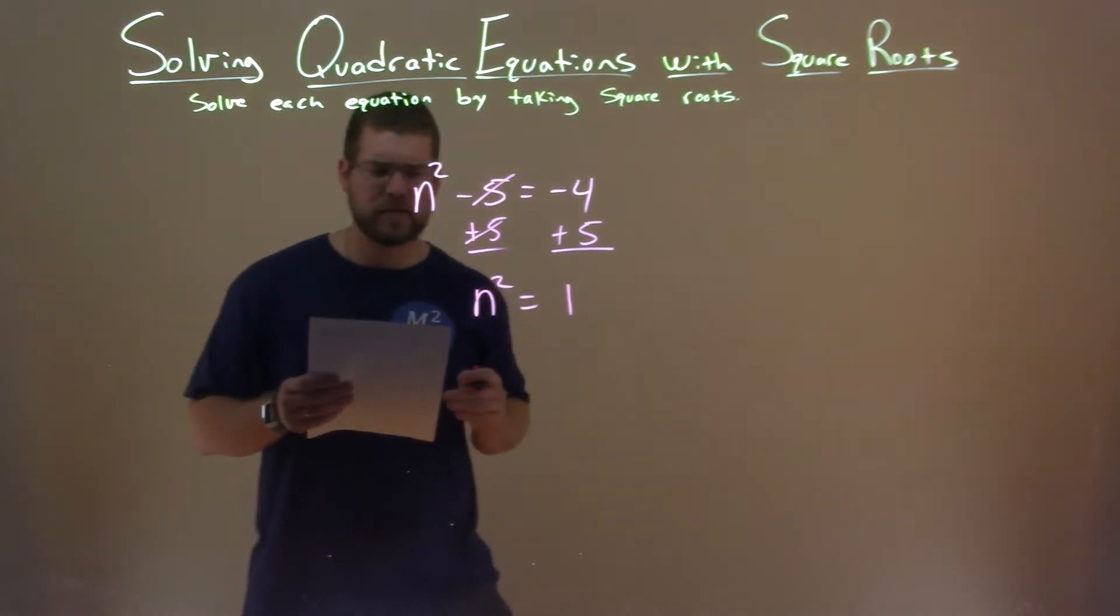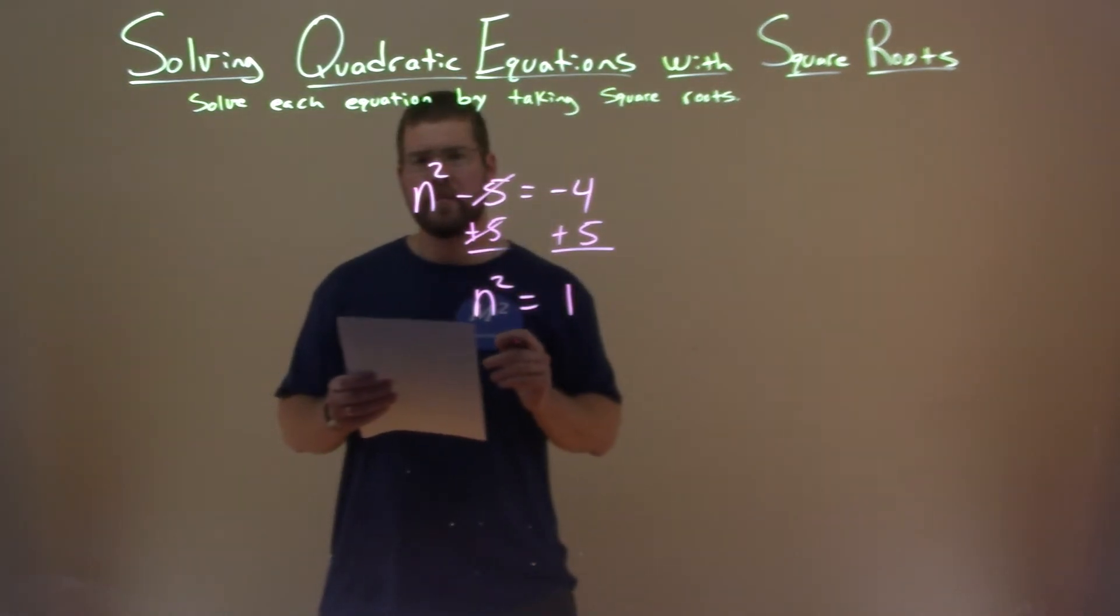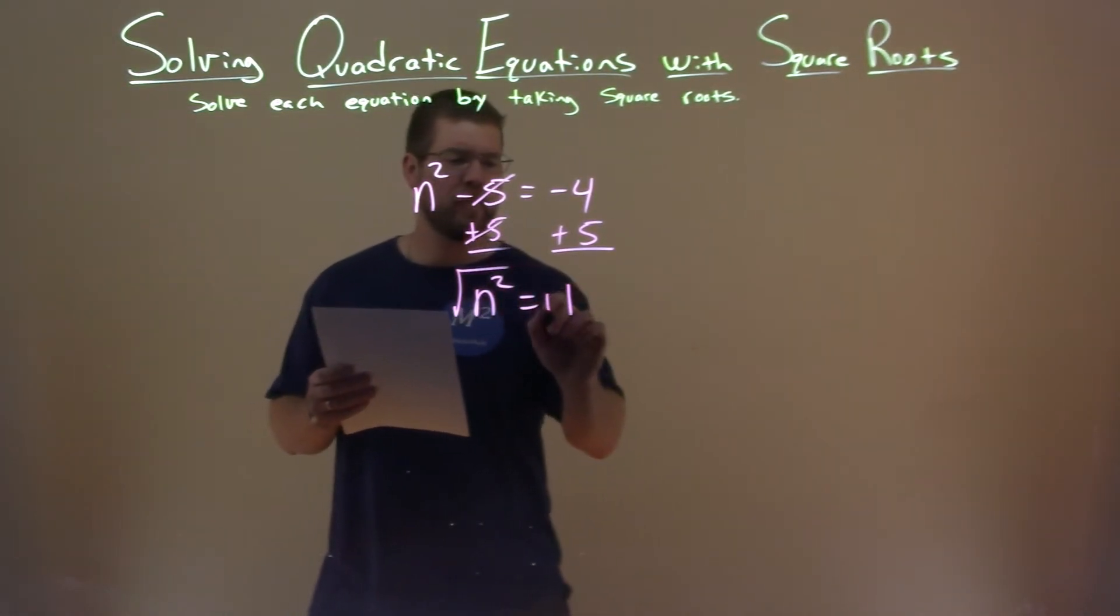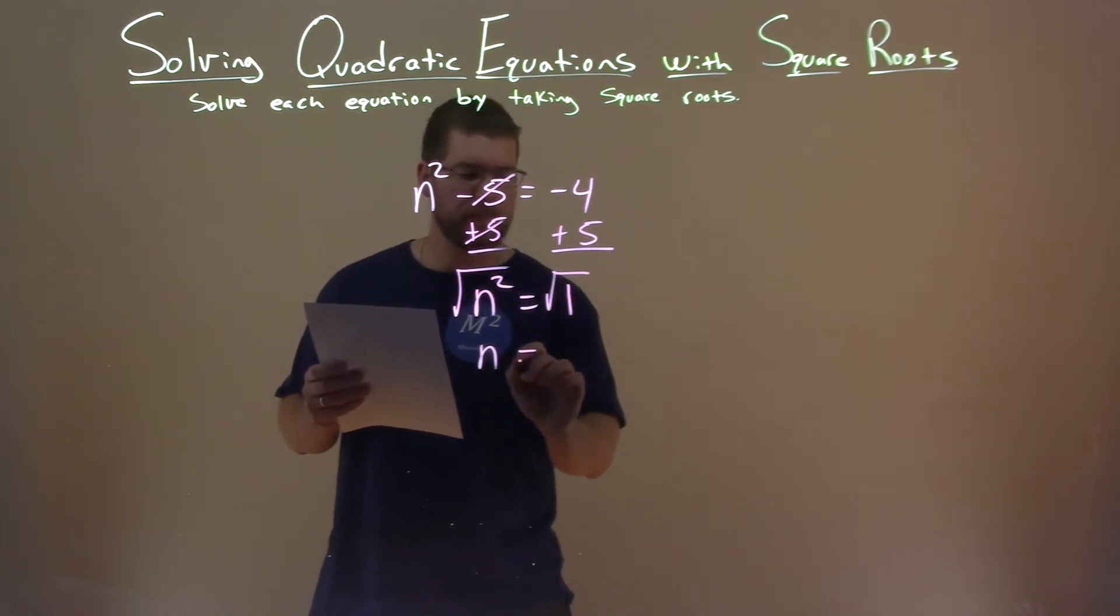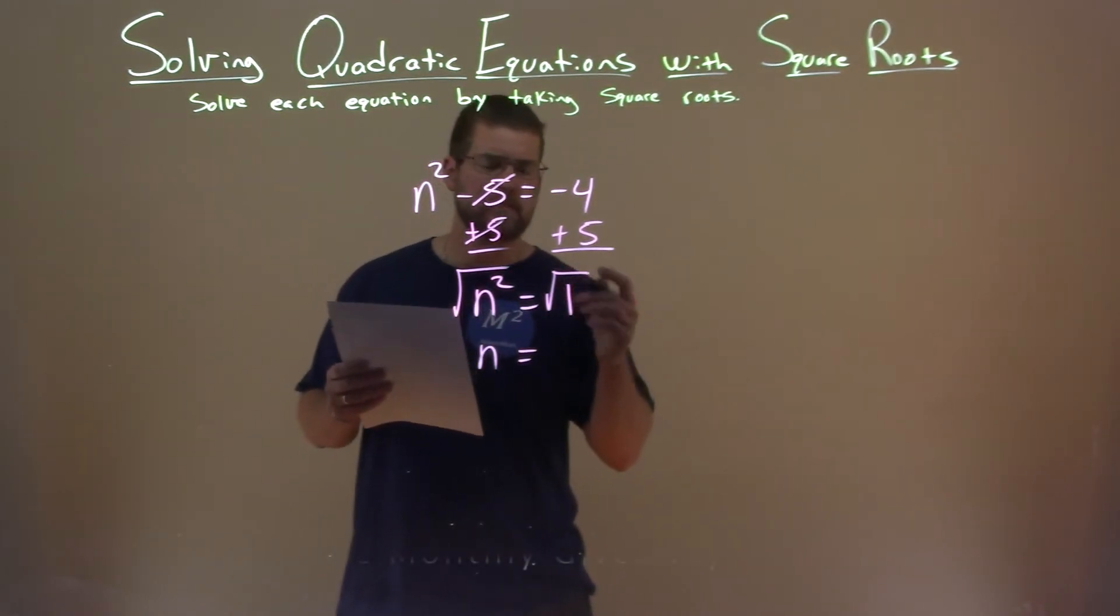Well, this is kind of easy, but be careful. We have n squared equals 1 now. So we still need to take the square root of both sides to get rid of that squared value for the n, and the square root of 1 is 1.